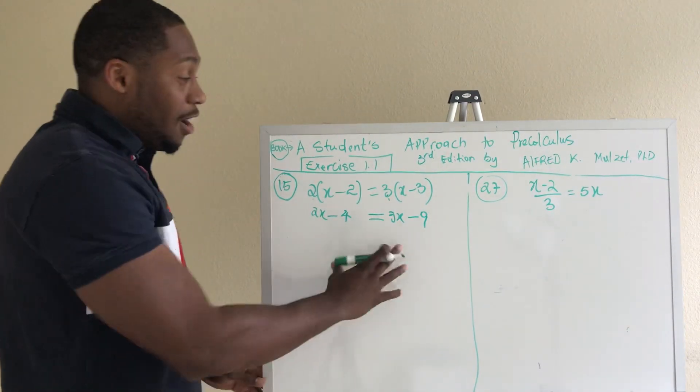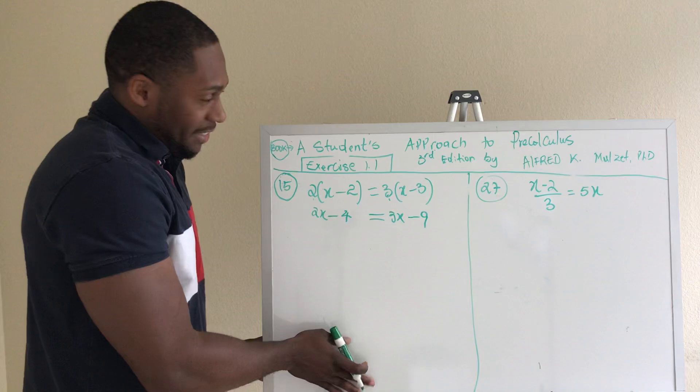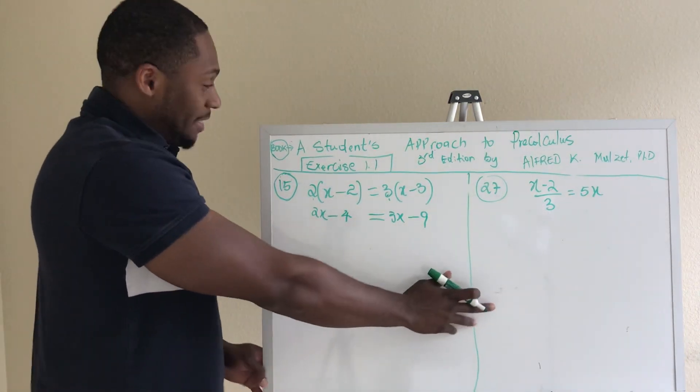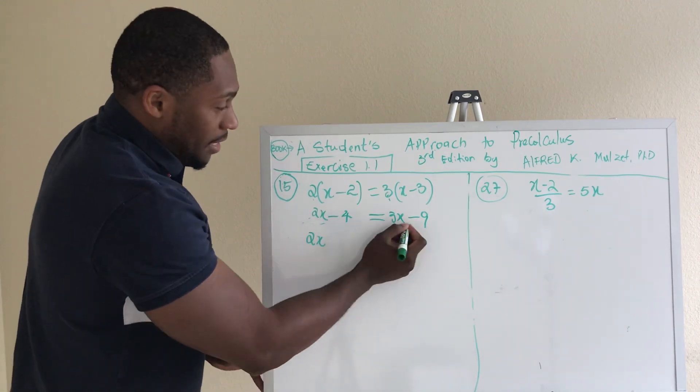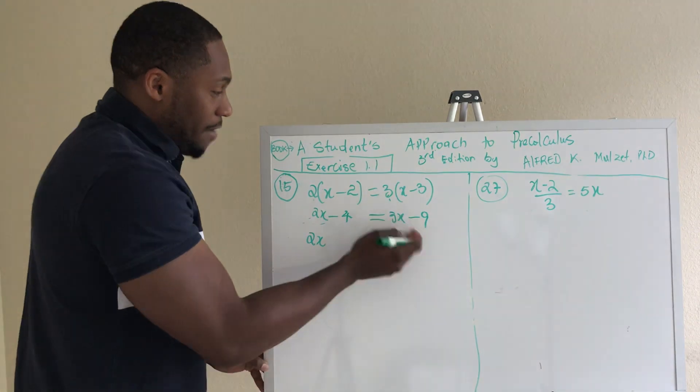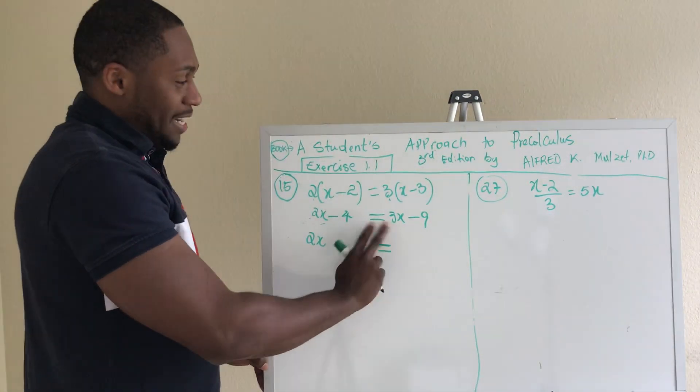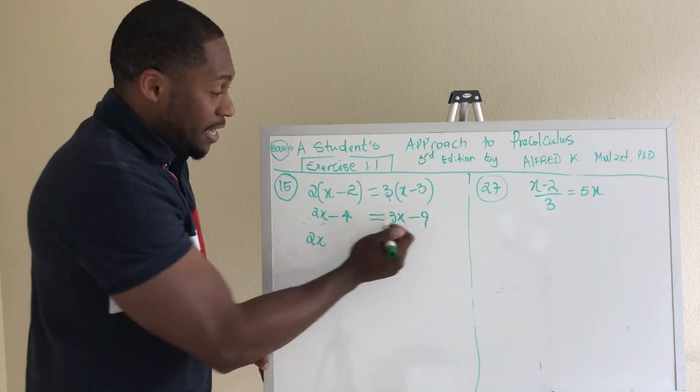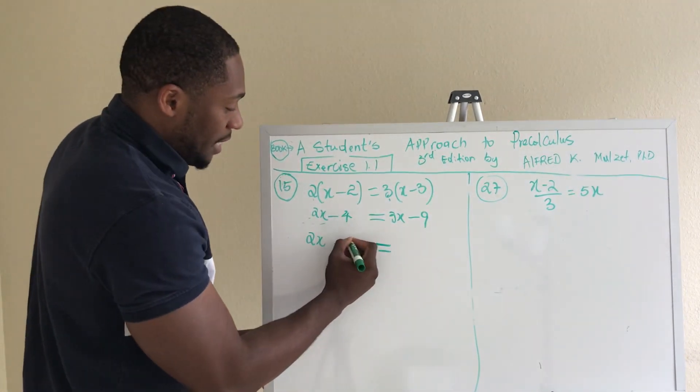The goal is to put everything that has X on one side, usually the left side, and everything that doesn't have X on the right side. We already have this one here, bring it down. Here we have 3X. So rule, every time you jump over this inequality sign, you've got to change the sign. So here was positive 3X, move it this way, it's negative 3X.